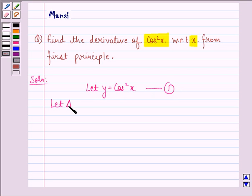Let delta x be a small increment in x, then delta y will be a small increment in the value of y. Then we will have y plus delta y equals cos square of x plus delta x, and we call this equation 2.